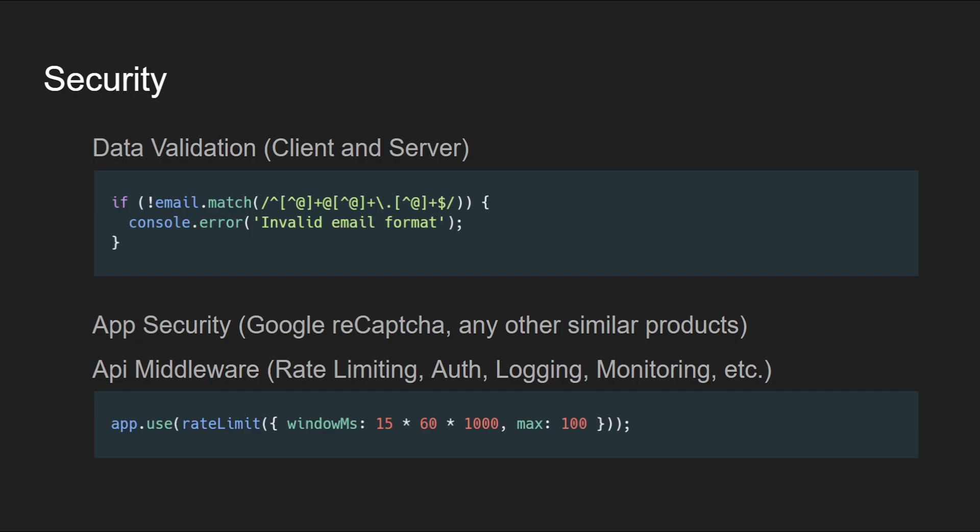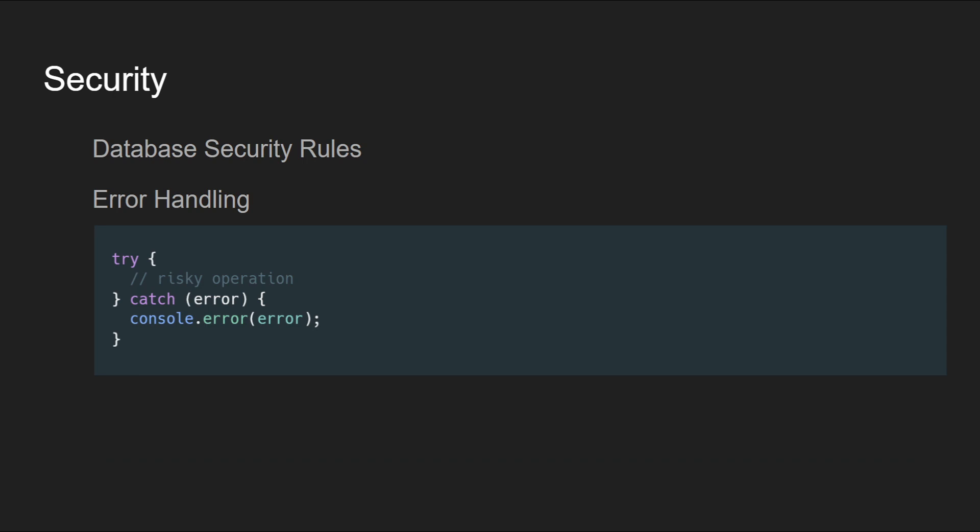Next you can talk about API middleware, covering topics like rate limiting, authentication, logging, and monitoring. Rate limiting is important to prevent DDoS attacks, authentication middleware authenticates incoming API requests, and logging supports monitoring and troubleshooting. You can also talk about database security rules, covering practices like setting permissions, encrypting sensitive data, and implementing secure access controls to protect data integrity and privacy. Database security rules apply both to the client and server side.